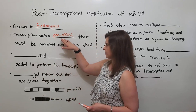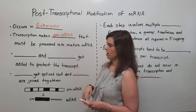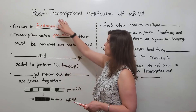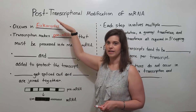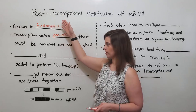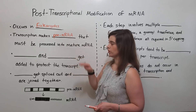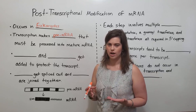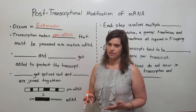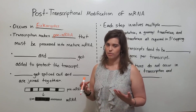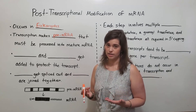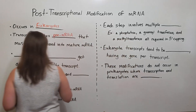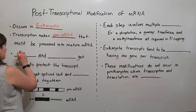In eukaryotic cells, transcription makes pre-mRNA that must then be processed post-transcriptionally — meaning after transcription — into mature RNA. There are three kinds of processes happening during that modification. The first is that a 5' cap is added.